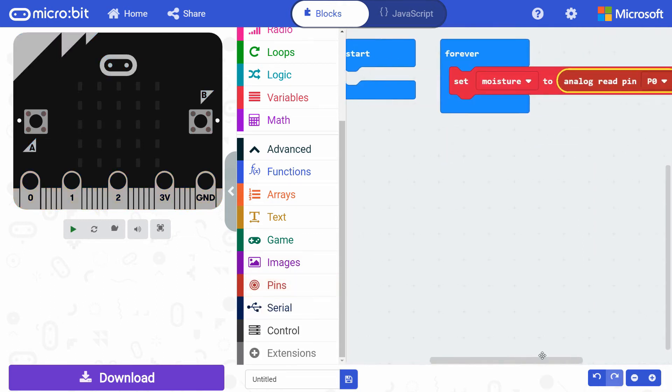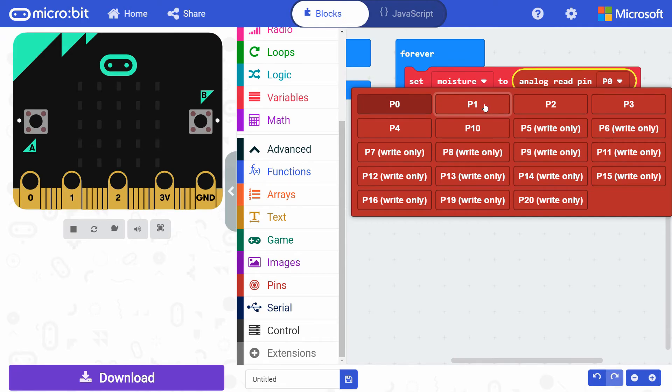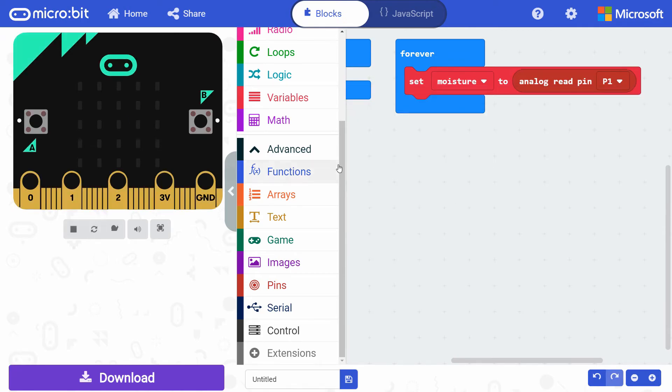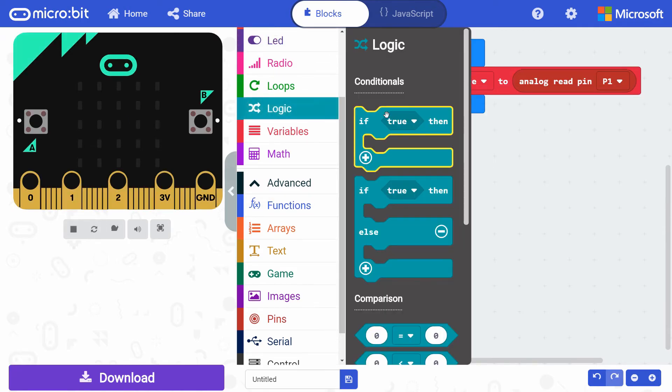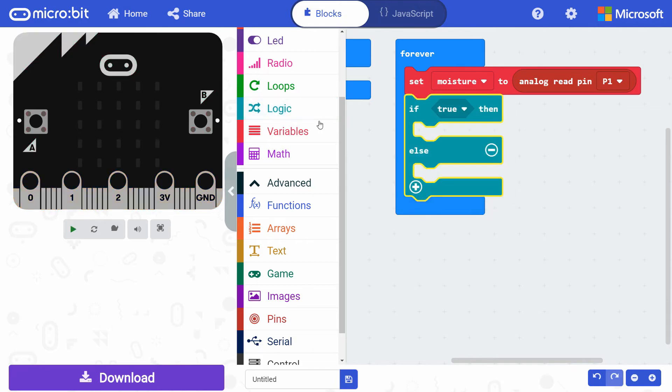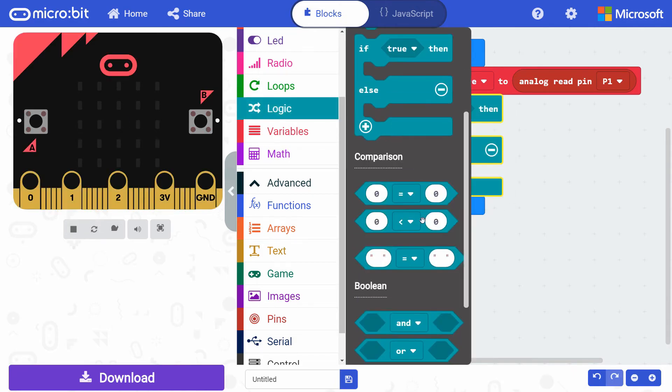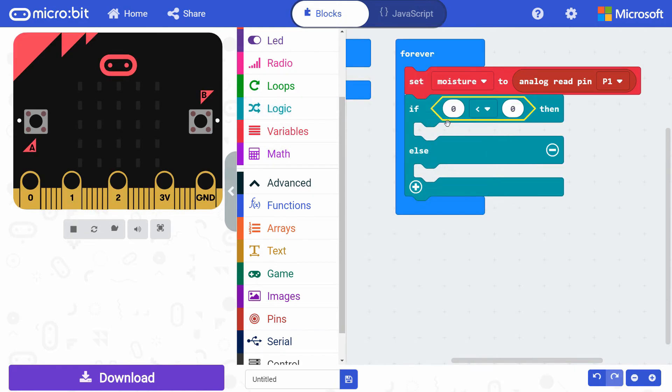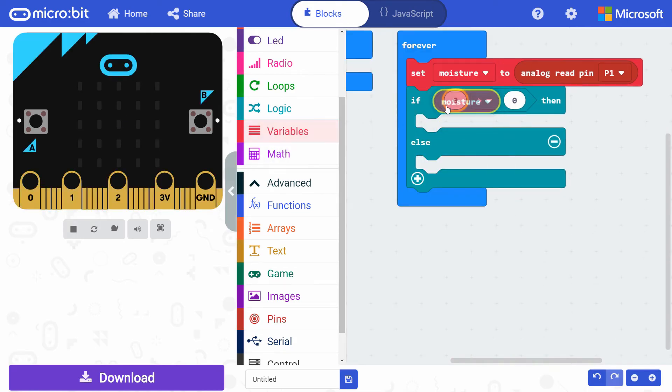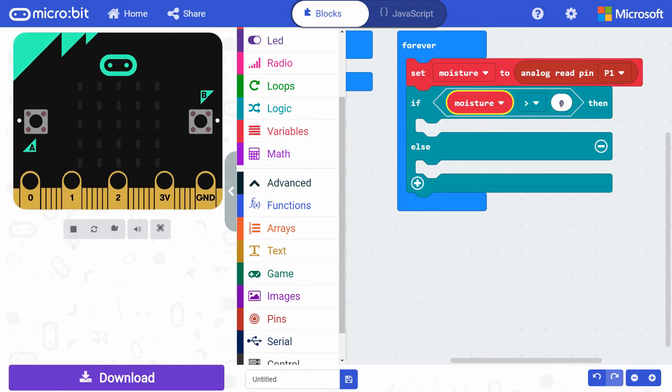Change the pin from P0 to P1. Drag an if else block from logic under the set moisture block. Get a less than block from logic and snap it to the condition part of the if statement. Change the less than sign to a greater than sign. Get a moisture variable and snap it to the left side of the inequality block. Change the right side to a value near our very wet reading, like 1010.